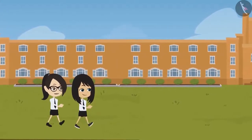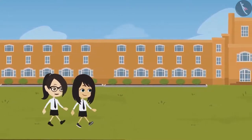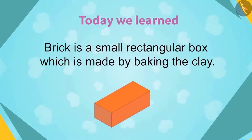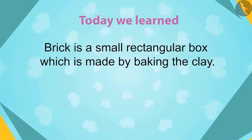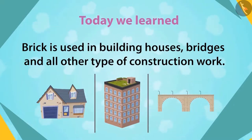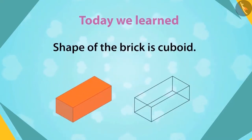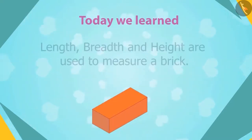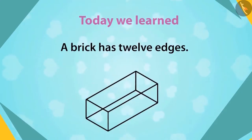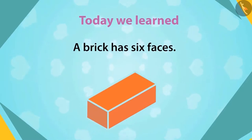Let me summarize the information we gathered on bricks today. A brick is a small rectangular box made by baking clay. Bricks are used in building houses, bridges, and all other types of constructions. The shape of a brick is a cuboid. Its size is determined by measuring its length, breadth, and height. A brick has 12 edges and six faces.